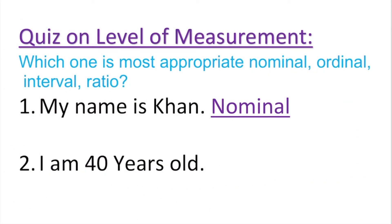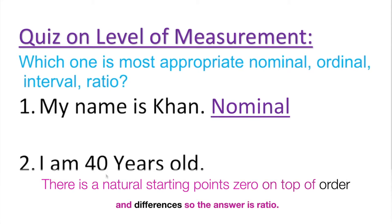Example two: I'm 40 years old. What kind of level of measurement is this? I look at this and I see there's a 40 years — a number of years. I can be 40 years, you can be 30 years, you can be 50 years. We can order it, and someone can be 0 years.